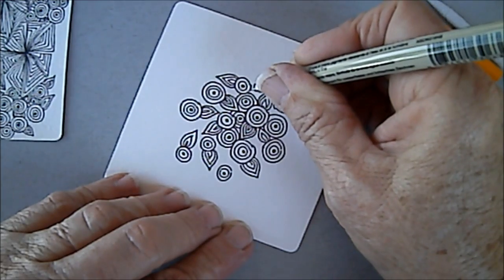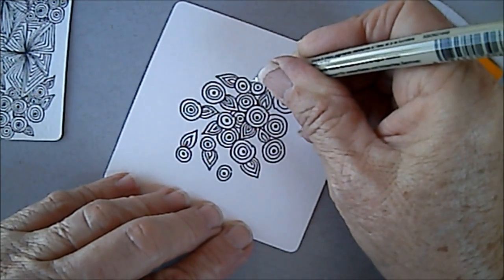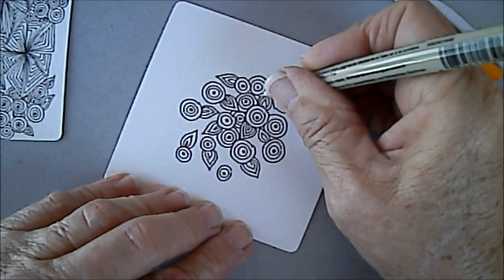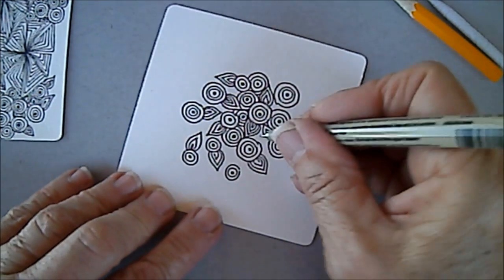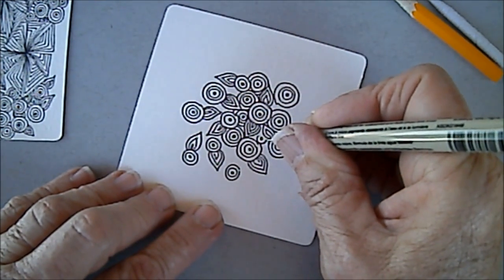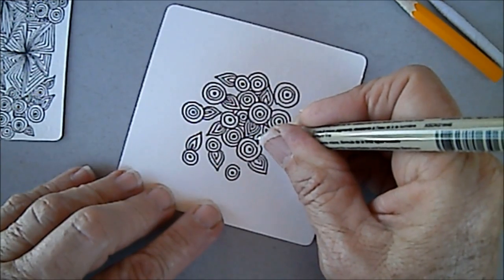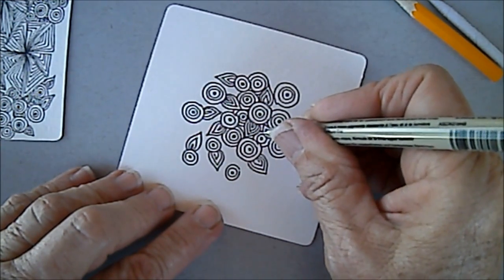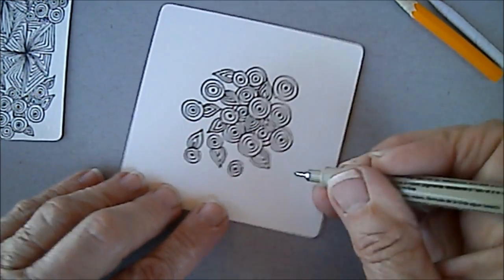And then a dot. And remember to do that hollypaw effect. Anywhere there's a hole, we're going to fill in with another tangle.